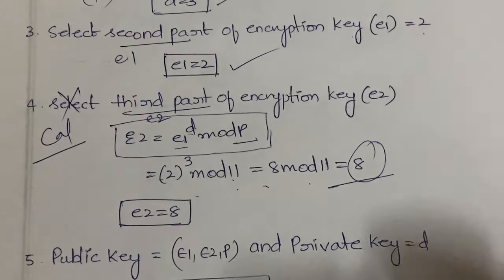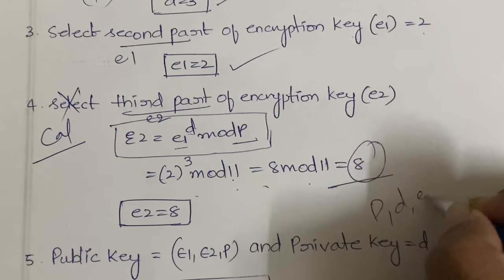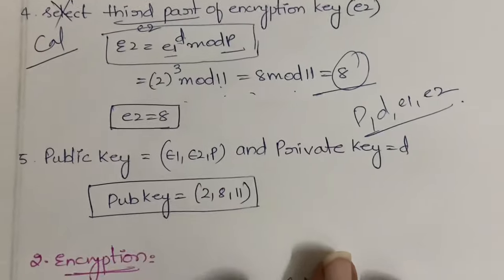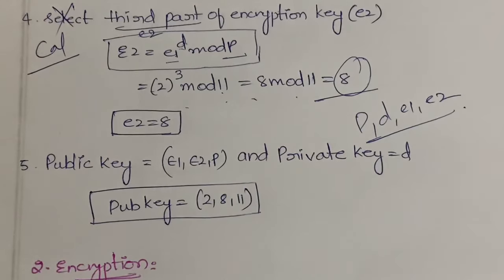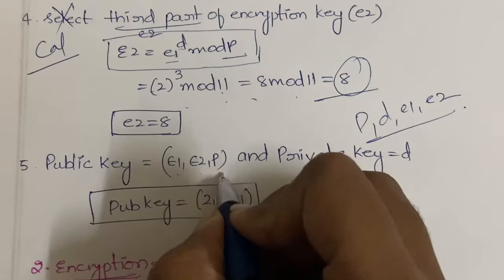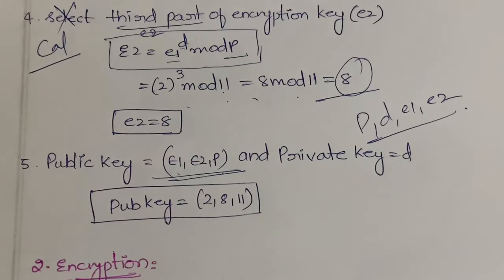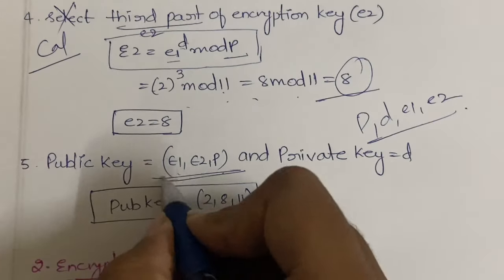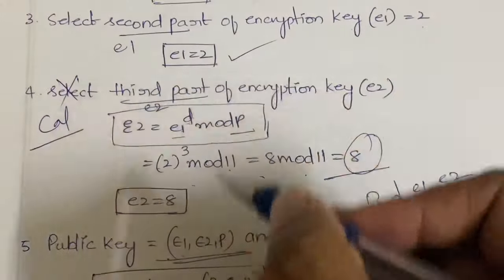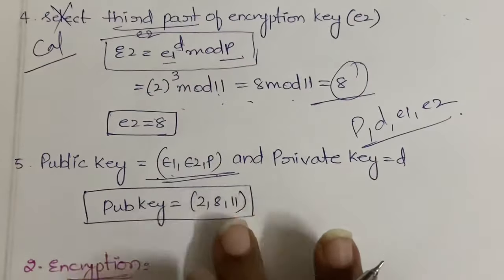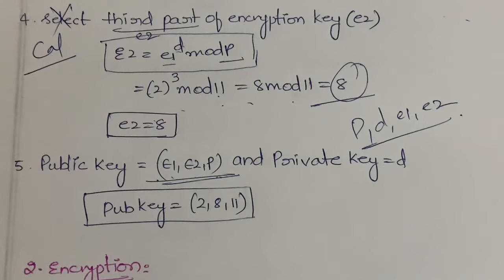Now we have the values of p, d, e1, and e2. In the fifth step, we calculate the public key, which is written as (e1, e2, p). So e1 = 2, e2 = 8, p = 11 — giving a public key of (2, 8, 11). The private key is the decryption key d = 3. Both keys are now generated, so key generation is complete.